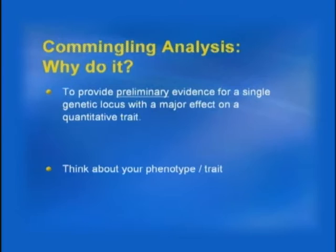We're going to jump right in now with commingling analysis. This is a method used to provide preliminary evidence for a single genetic locus with a major effect on a quantitative trait. In genetic epidemiology, a couple of terms you'll hear quite a lot are 'single genetic locus' versus 'polygenic inheritance.' It's important to understand the difference between these two things, because it influences what you're going to do in terms of your analyses.